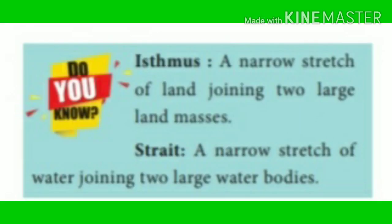What is an Isthmus? A narrow stretch of land joining two large land masses is called an Isthmus. A narrow stretch of water joining two large water bodies is called a Strait.